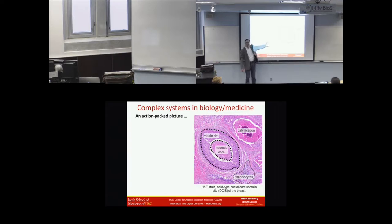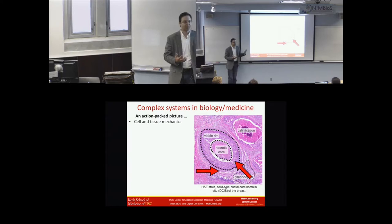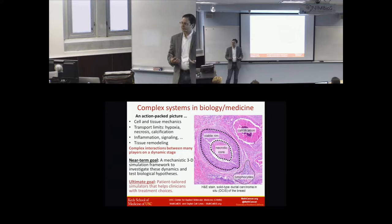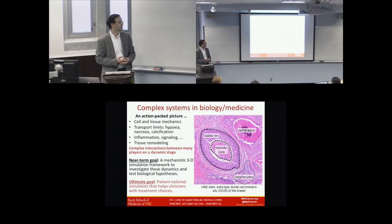We have very complicated stuff in one picture: biomechanics, transport, evolution, phenotypic adaptation to microenvironmental changes, gradients of transport species — all in one picture. Our job as modelers is to try to come up with systems that help us detangle these complicated pictures and make sense of them, hopefully giving insights to clinicians. The near-term goal is to develop mechanistic 3D simulation systems to get predictive models, and in the long term, give tools to clinicians and biologists to help plan experiments or make treatment decisions.